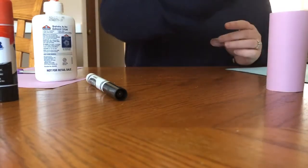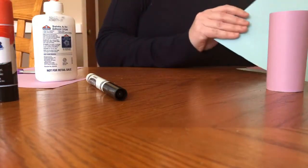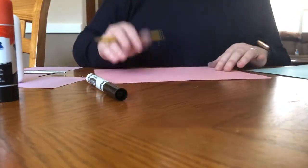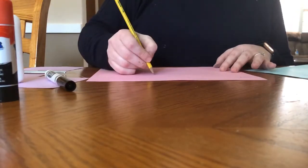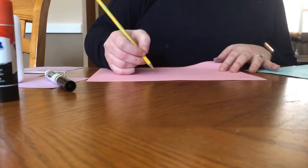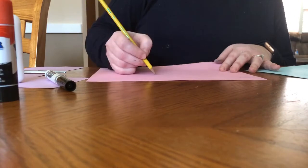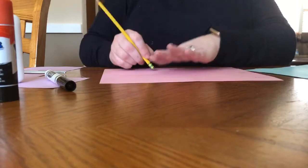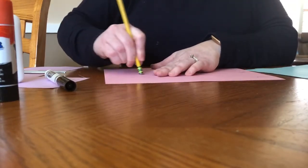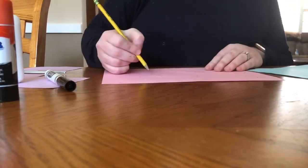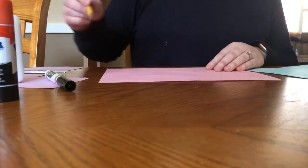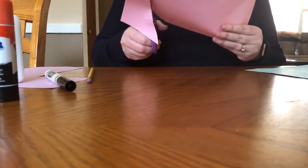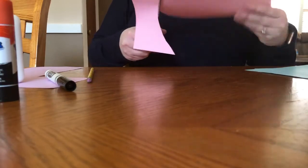Then while that's taking a second to dry, you're going to pick one of your other colors and we are going to draw the butterfly's wings. So I'm going to sketch it out first. Good thing we have erasers. Once I have sketched it out, I'm going to cut out the wings.